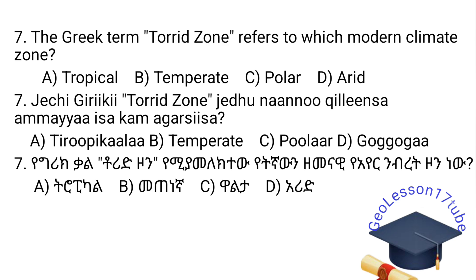Question number seven: The Greek term 'Torrid Zone' refers to which modern climate zone? The answer choices are: A. Tropical. B. Temperate. C. Polar. D. Arid. The Torrid Zone refers to the Tropical Zone. The answer is A.